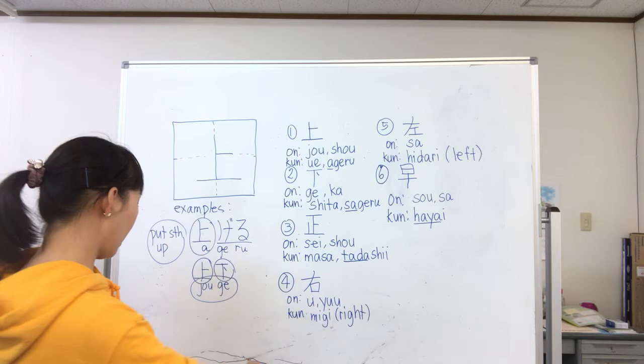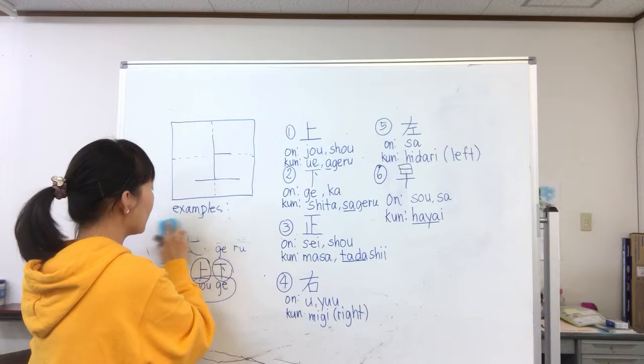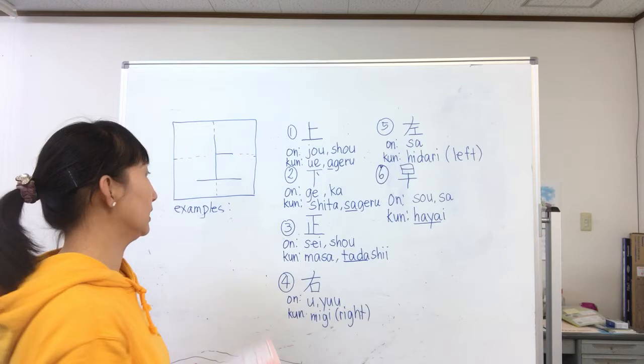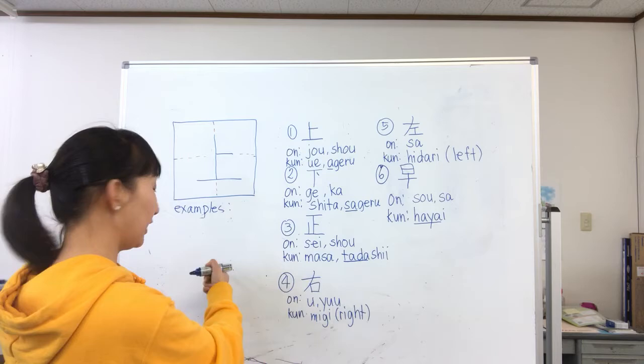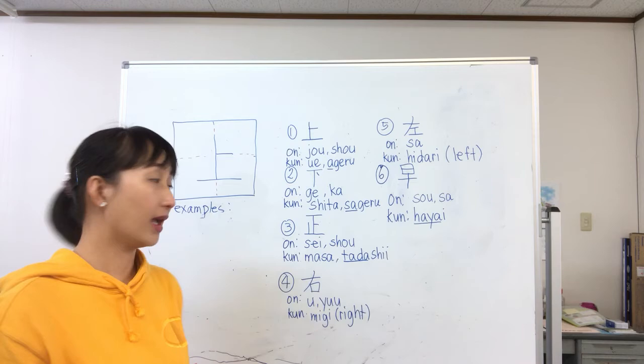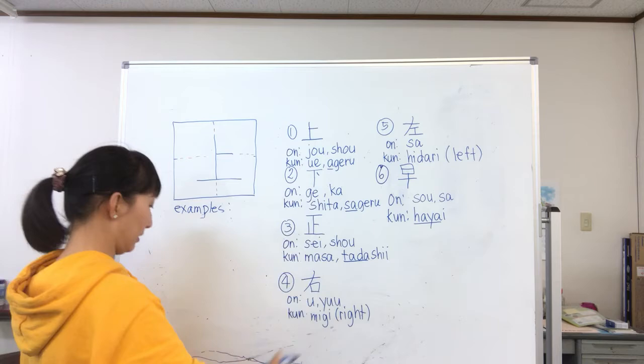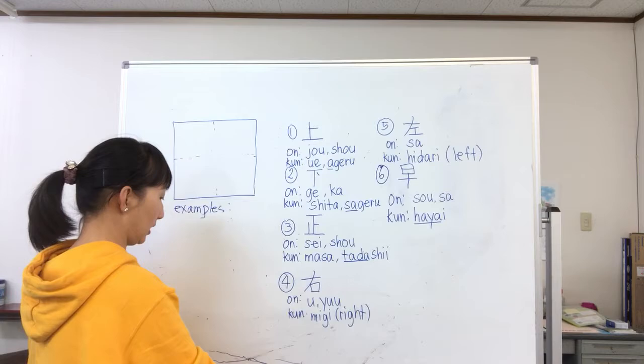Our second kanji: if we have uwe for up, we also have shita for down. Its onyomi is ge and ka, and its kunyomi is shita, which means down or to go down. This is how you write shita — one, two, three.